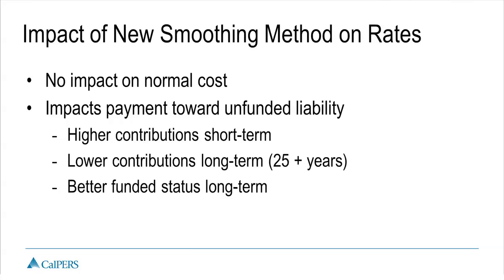Then the rate ramps back down — to 4%, then 3%, and so forth until the trapezoid is complete. No one likes to pay extra money, but with direct rate smoothing, you're allowed time to plan for the increase and the debt is repaid over a fixed period. You will not see a change to your employer normal cost — which may be of interest given PEPRA rules regarding normal costs. What you will see is a change in your unfunded liability rate: higher contributions in the short term, lower contributions in the long term, and recovery of your funded status over the long term.